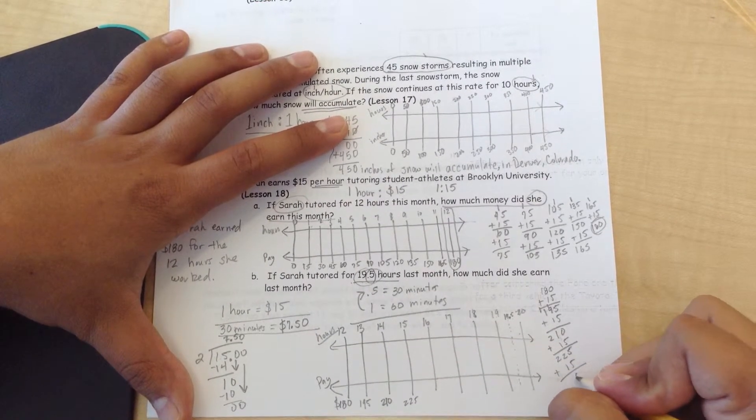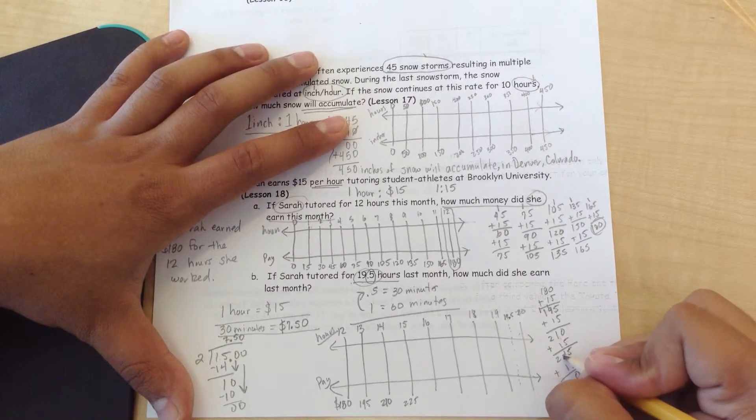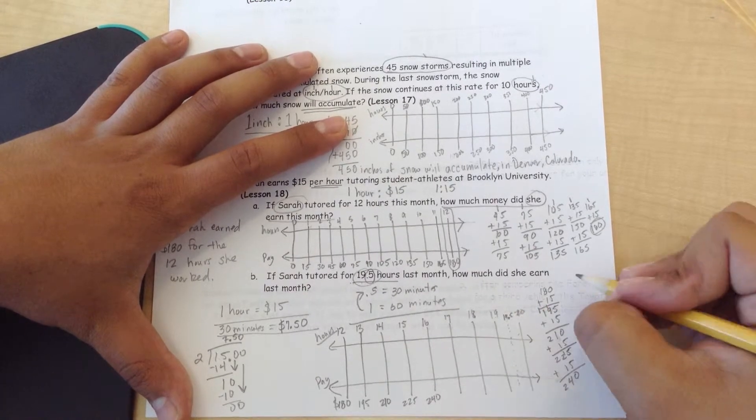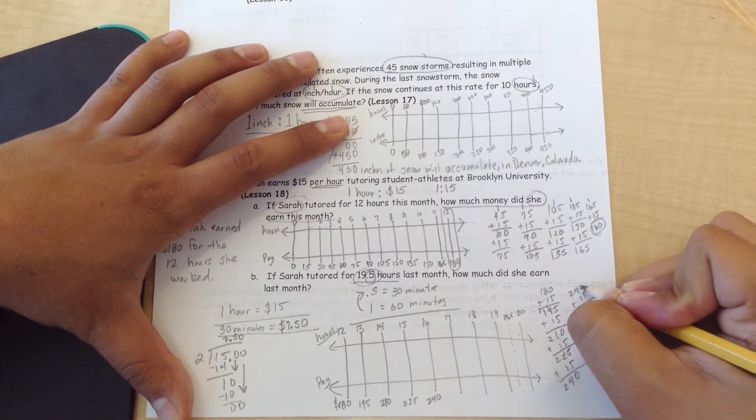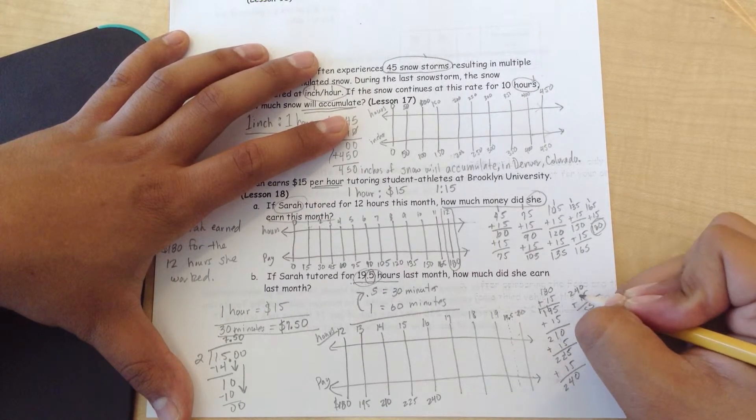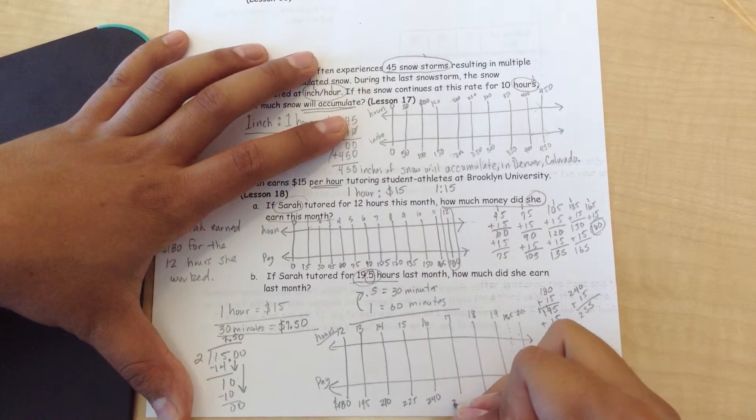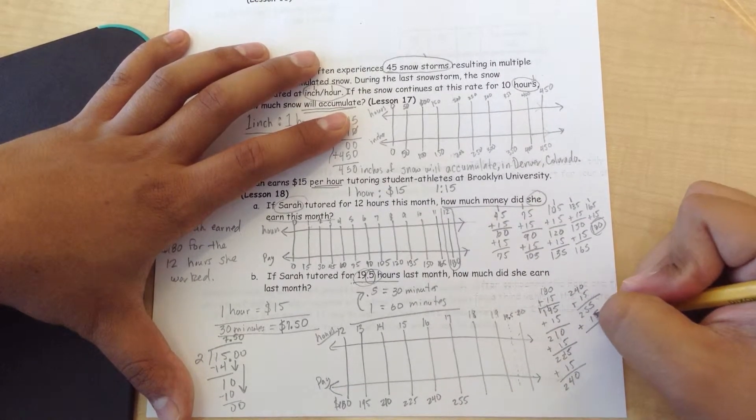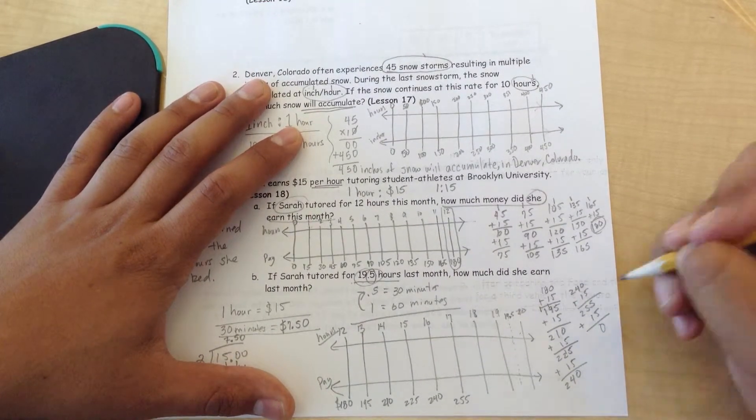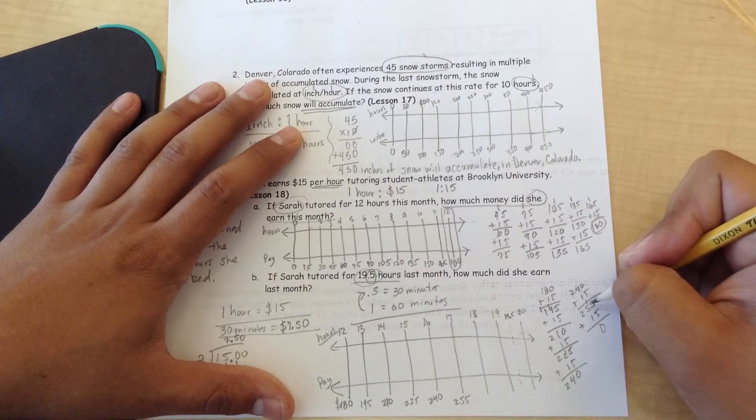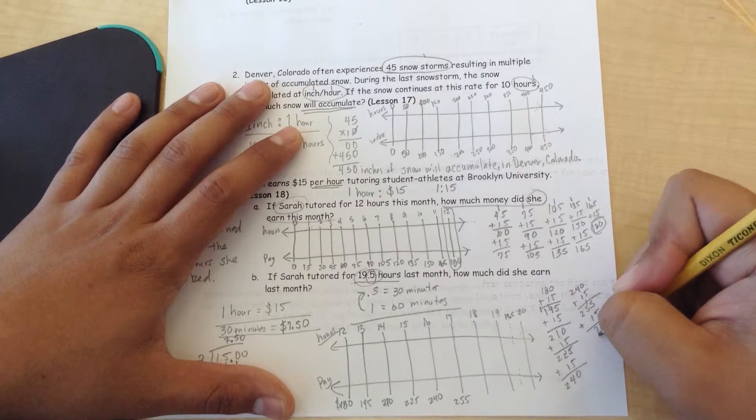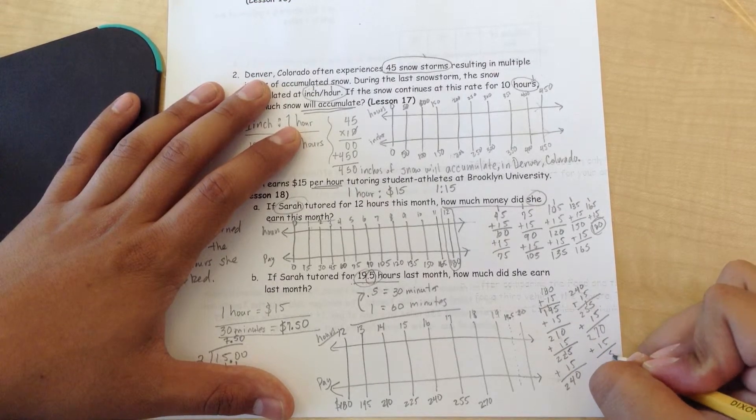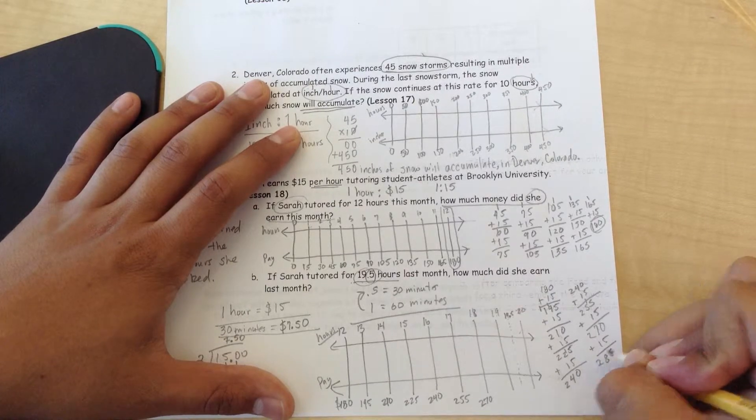225 plus 15, 5 plus 5 is 0, carry the 1 over. 2 plus 1 is 3, plus 1 is 4, 2 plus nothing is 2, all equaling 240 dollars. Run out of space. I'm going to add it right here. 0 plus 5 is 5, 4 plus 1 is 5, 2 plus nothing is 2, $255. Man, this girl is making bank. Making it rain. All right. Plus another 15, 5 plus 5 is 0, carry the 1 over, 5 plus 1 is 6, plus 1 is 7, plus 2 is 270. Let's keep going. 0 plus 5 is 5, 7 plus 1 is 8, 2 plus nothing is 2, 285.